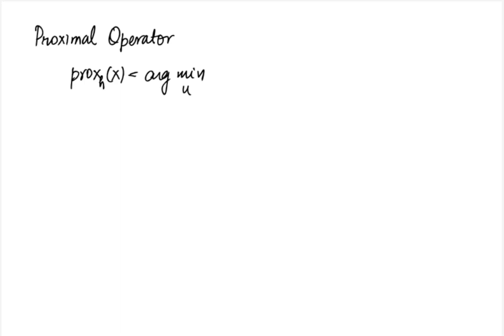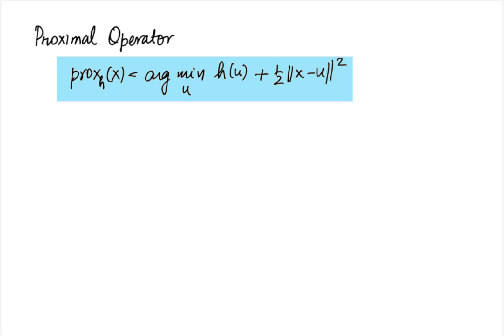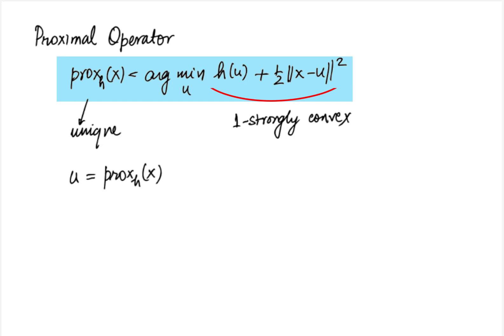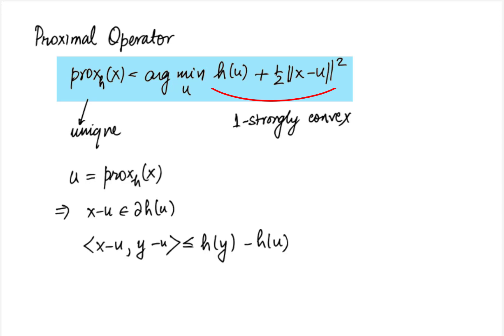The proximal operator with respect to h of x is defined as argmin_u h(u) + (1/2)||x - u||^2, where we use an inner product norm, as in the case of projection. Since h is convex, the objective is at least one-strongly convex, so the prox of x is unique. If u is the prox of x, then from optimality conditions, x - u is a subgradient of h at u. Alternatively, using the definition of the subgradient: <x - u, y - u> ≤ h(y) - h(u) for all x, y, and u = prox(x).